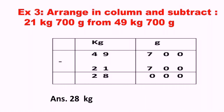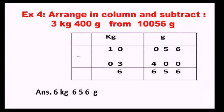In subtraction, there are three terms: minuend, subtrahend, and difference. The minuend is the bigger number and goes in the upper portion. So 49 kg 700 gram will be on top and 21 kg 700 gram will be below it. After subtracting, I have got 28 kg only, because there is no gram remainder.